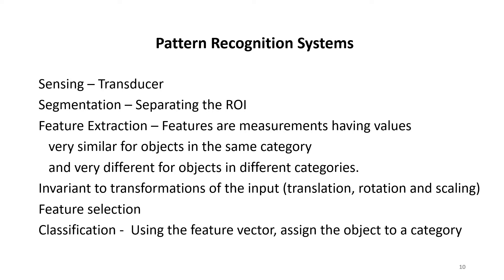The next block is segmentation, which separates the region of interest where the object is present. Then comes feature extraction. Features are measurements having values that are very similar for objects in the same category and very different for objects in different categories. Features should be invariant to transformations of the input such as translation, rotation, and scaling.